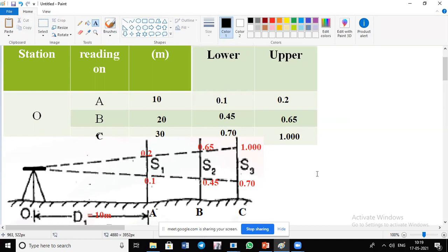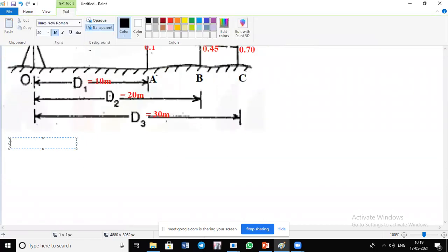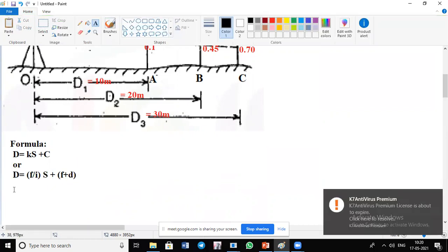Now your aim is to find out the tacheometric constants K and C. We are having the formulas in order to calculate the horizontal distance. D equals K times S plus C, or D equals F/I times S plus F plus D. This is the formula which you are having. Now we will start doing the calculation.